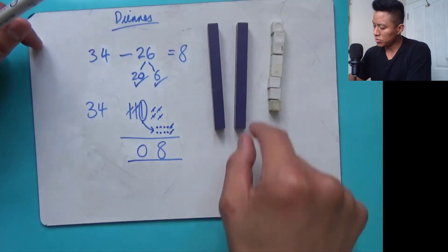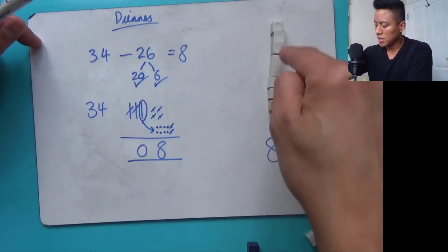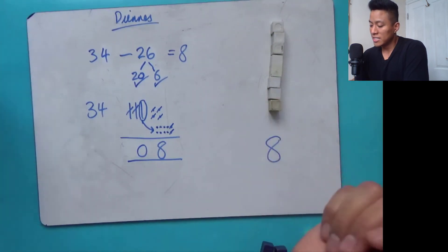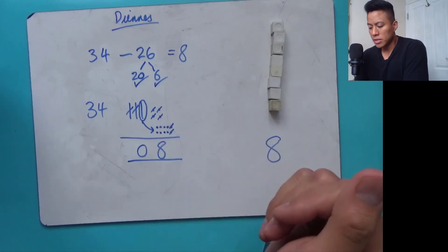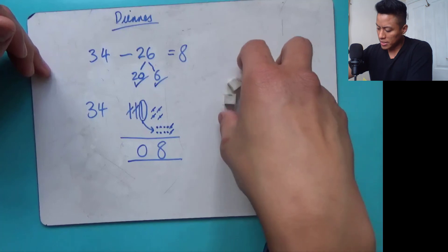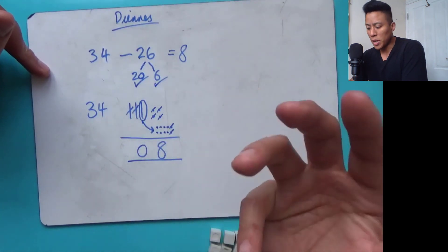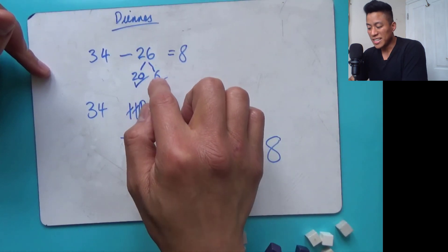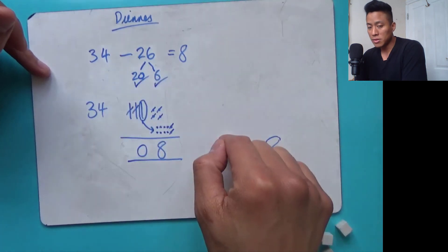Subtracting the two tens here — one ten, two tens. And here I am, I'm left with eight. I don't need to put zero here — it's just eight. So that's how you can use subtraction using deans and exchanging when the ones in the subtrahend is greater than the ones in the minuend.